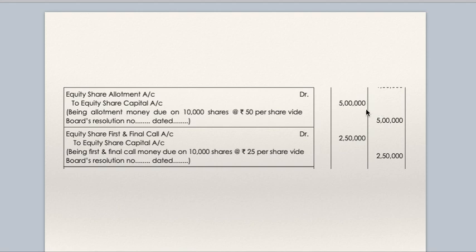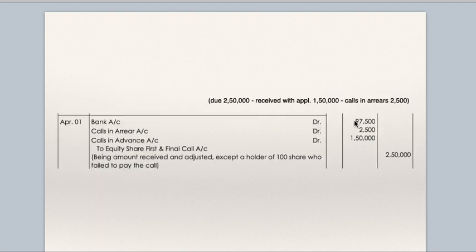Now you have to show allotment money due: equity share allotment to equity share capital — on 10,000 shares at Rs. 50, this due entry must be passed. And first and final call due: equity share first and final call to equity share capital at the rate of Rs. 25. Bank account debit 2,50,000; calls in advance debit 1,50,000; to equity share first and final call 2,50,000.